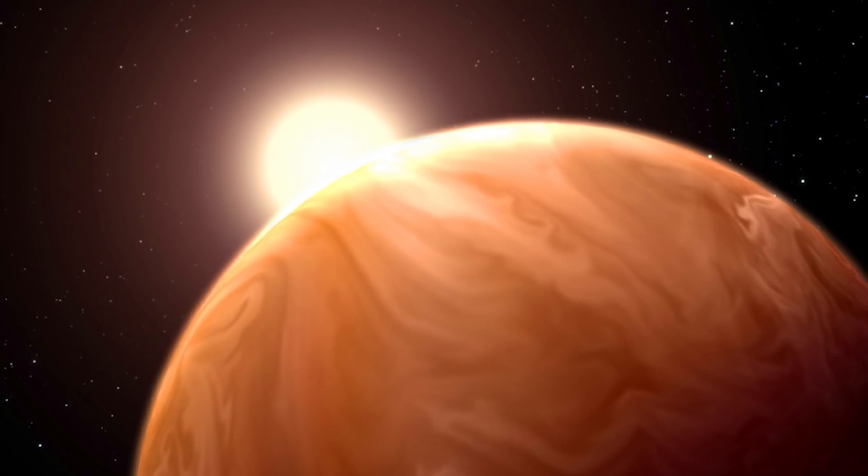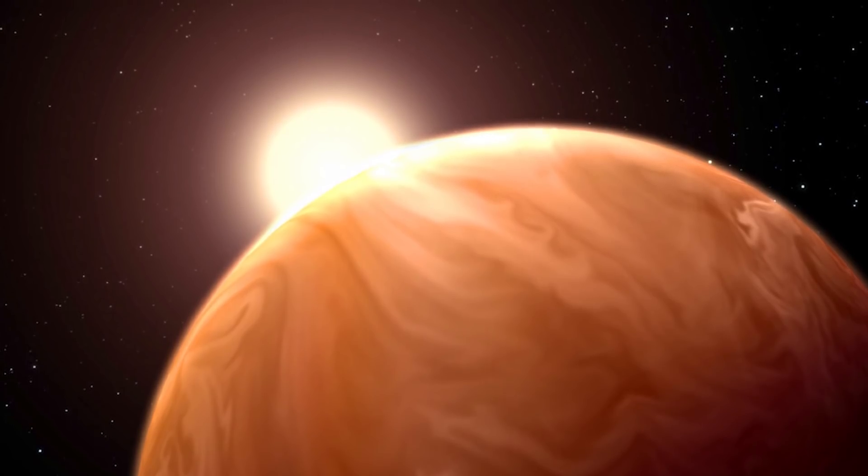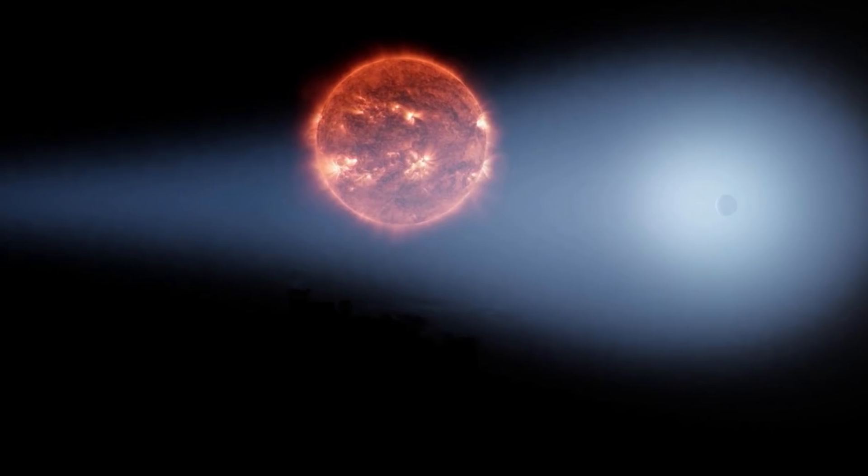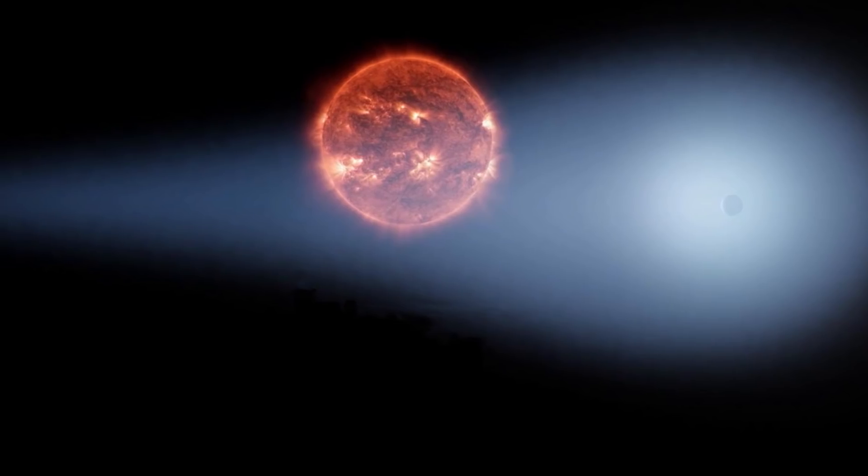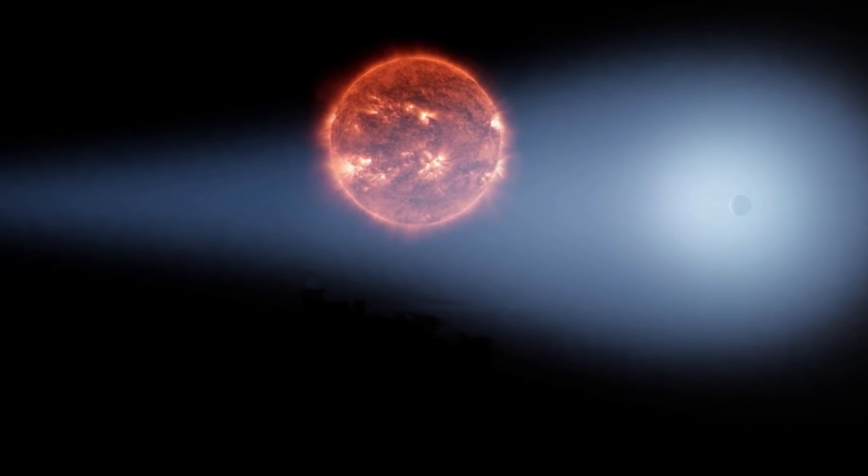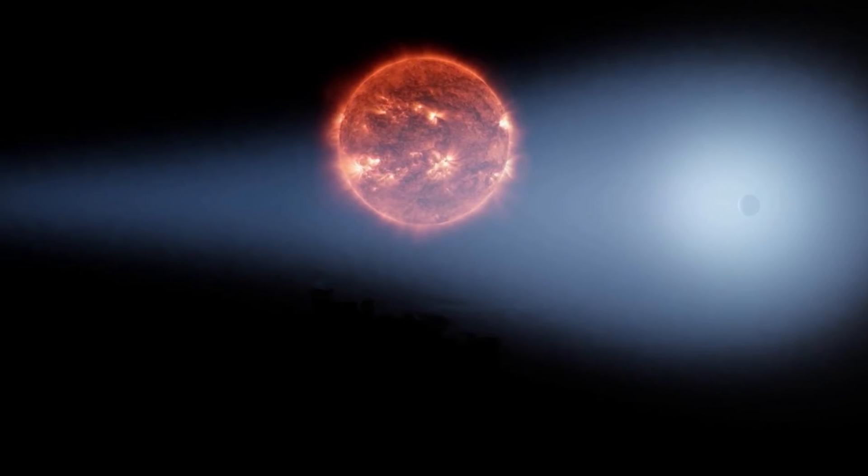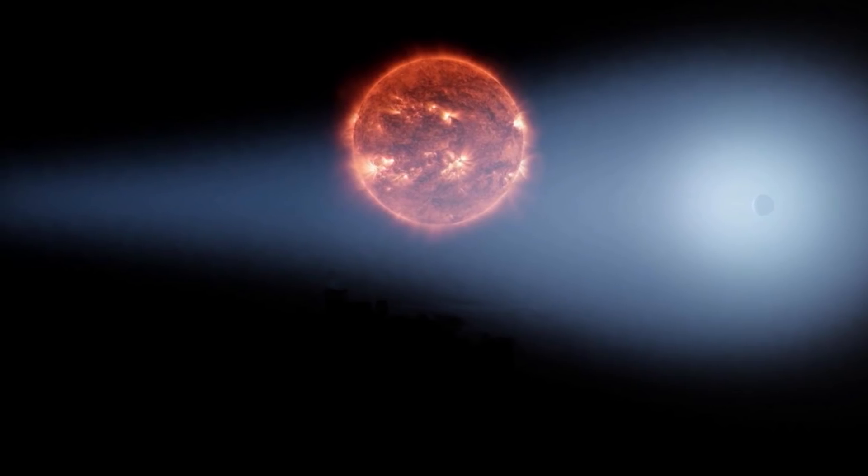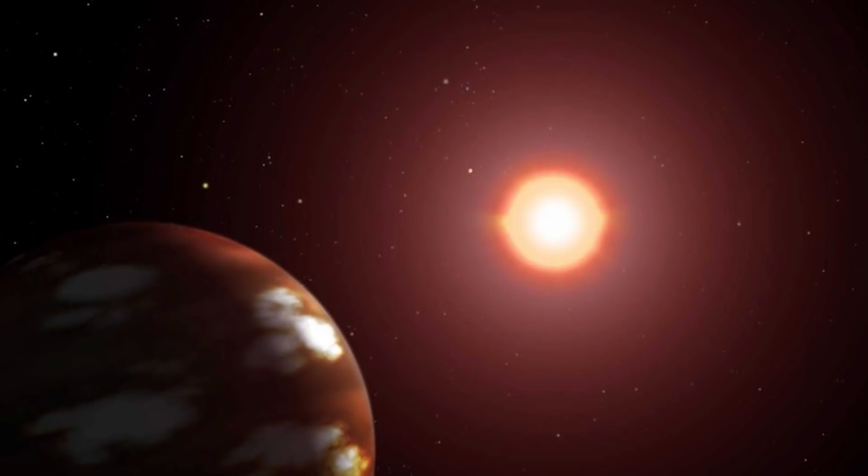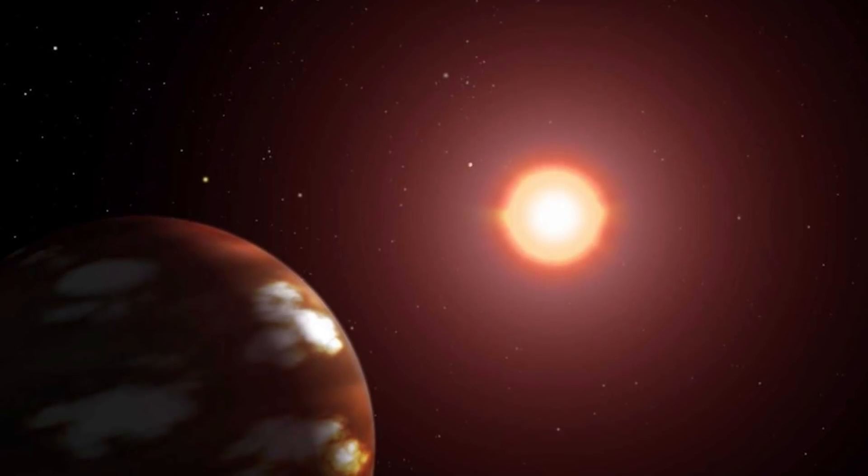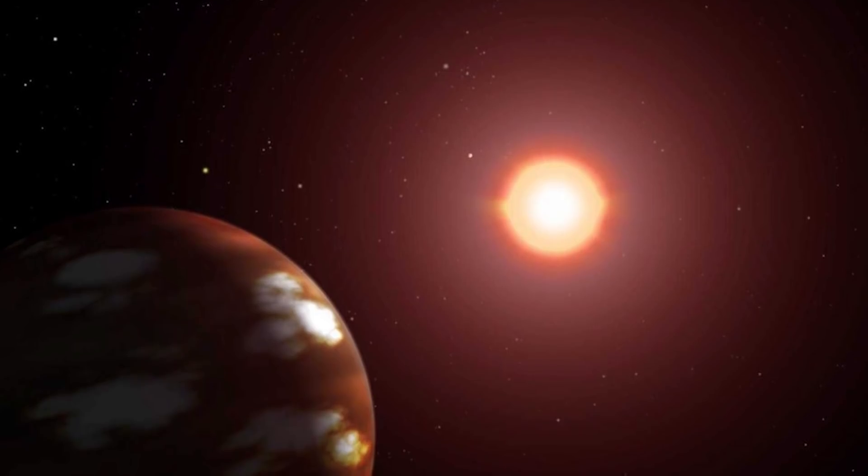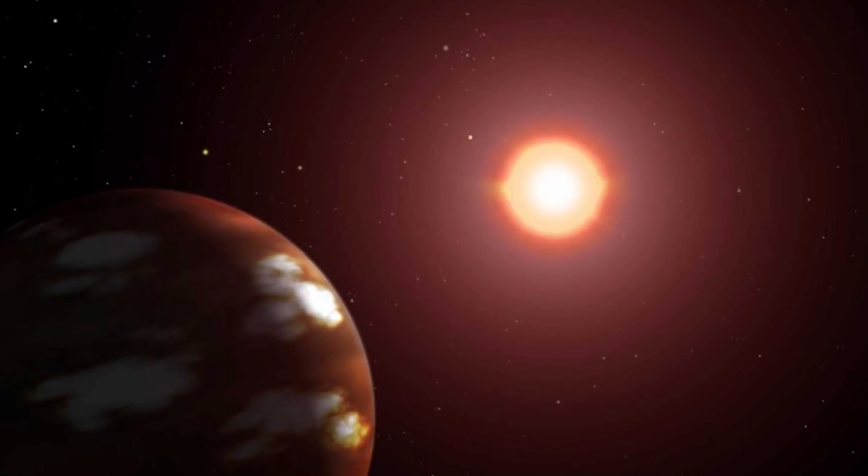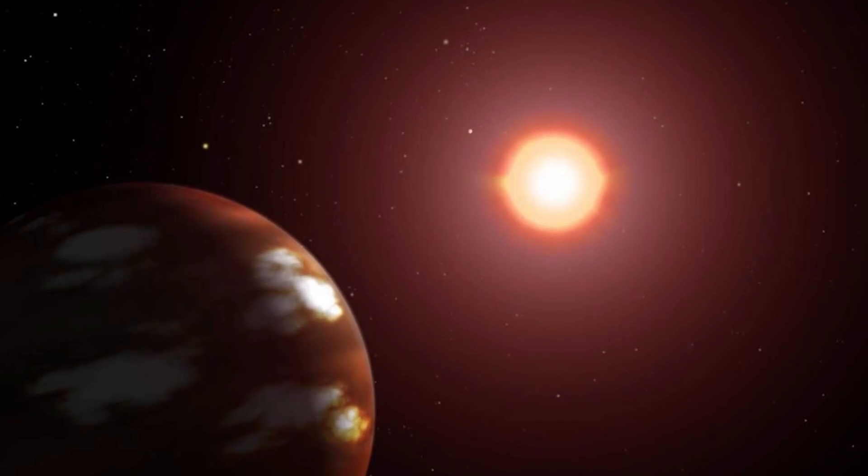However, this exoplanet's size, density, and atmospheric content indicate to astronomers that GJ436b is anything but typical. Instead, it has far less methane and far more carbon monoxide than it should, despite carbon monoxide being scarce above certain temperatures, temperatures that the planet regularly reaches due to its close proximity to its star. The only way that such a large amount of carbon monoxide could be present on the planet was if somehow there was also water present. That was when scientists realized that GJ436b is one of the strangest things in space that we have ever discovered.